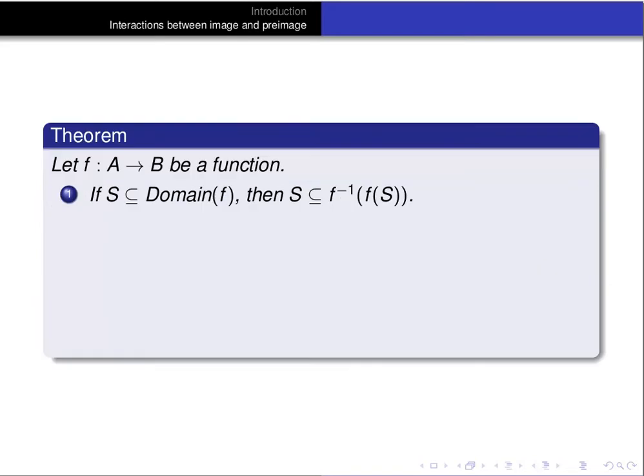The theorem we're going to prove today is the following. Let f be a function from A to B. First, if S is a subset of the domain of f, then S is a subset of the pre-image of the image of S. Second, if T is a subset of B, the co-domain, then the image of the pre-image of T is a subset of T.